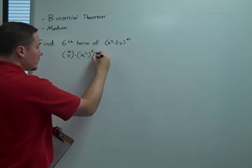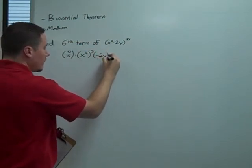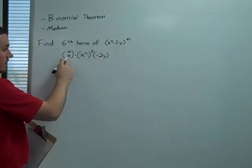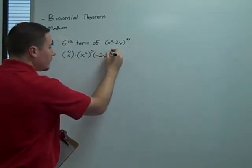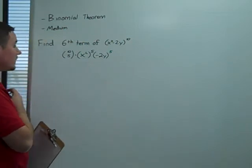Then we have our second term, which is negative 2y, raised to the fifth power. Again, we get that from the bottom term of the choose coefficient.